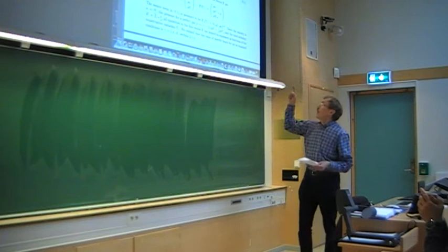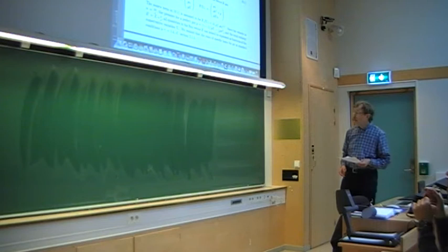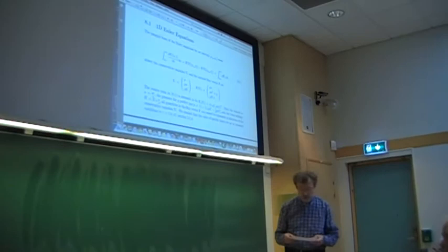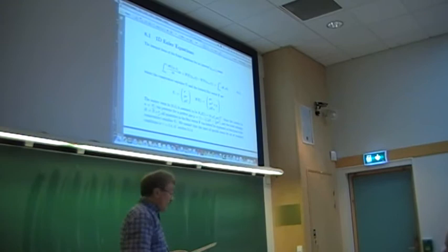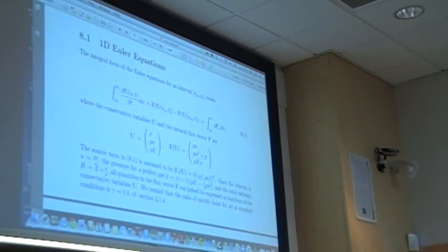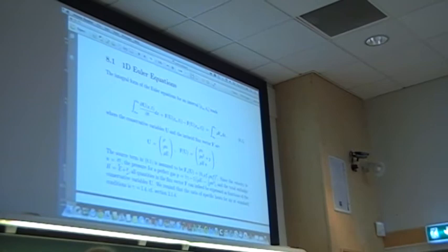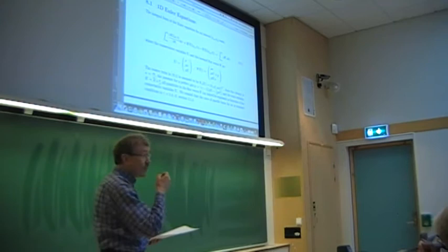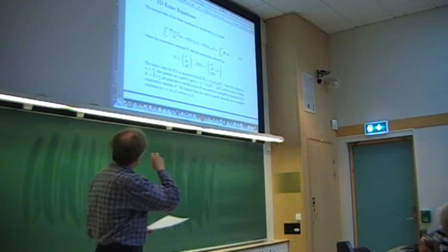Welcome to the next lecture of computational heat and fluid flow. We started to look at the one-dimensional Euler equations and we looked at the integral form that we get from the conservation of mass, momentum, and energy. That's equation 8 to 1 in the lecture notes. When we make the same assumptions as for the scalar conservation law — that we have smooth flow so the functions are continuously differentiable — then we can use the fundamental theorem of calculus to express the difference of the fluxes at the east and west faces as a derivative df/dx.